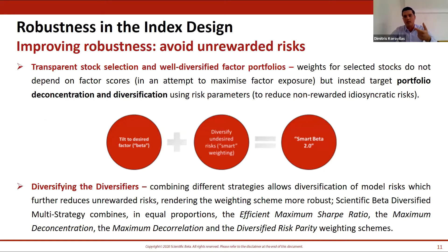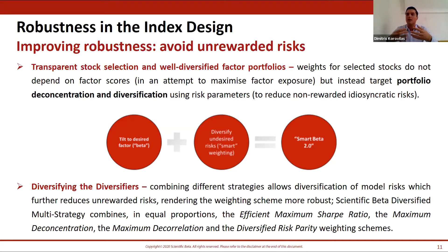Even when choosing a weighting scheme aimed at diversification, there is model risk in the specific choice. For our indices, we use a balance of weighting schemes to reduce this model risk — using well-diversified weighting schemes and taking the average. With this framework, you aim for diversified portfolios and also diversify away model risk.